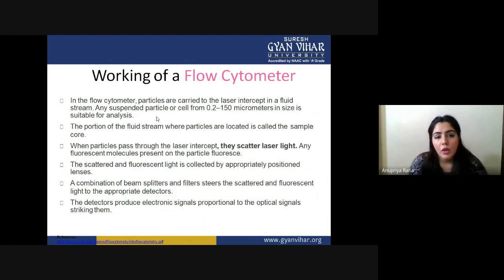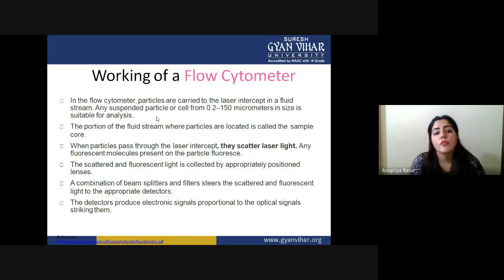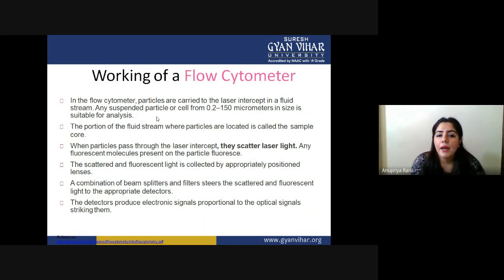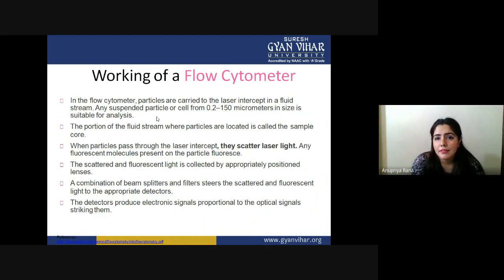Now let's see how the flow cytometer works. Particles are carried to the laser intercept in a fluid stream. We first make a fluid stream, and any suspended particle or cell from 0.2 to 150 micrometers in size is suitable for analysis. For nanometer-scale particle analysis, we would need electron transmission microscopy instead.